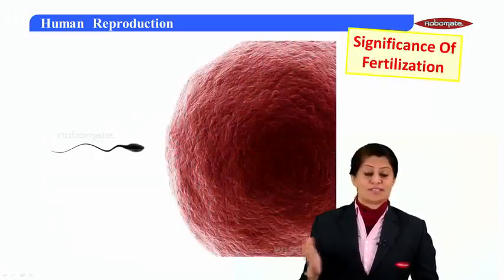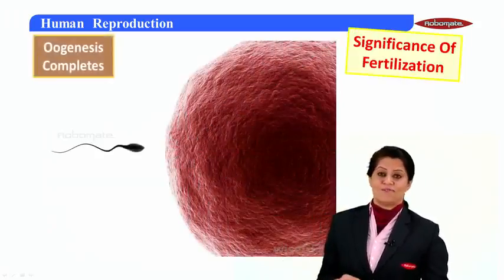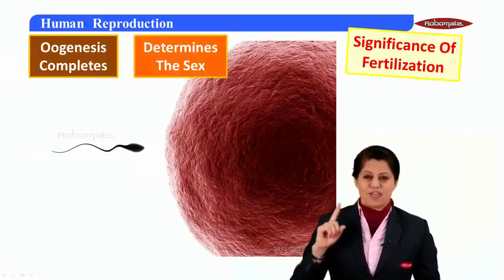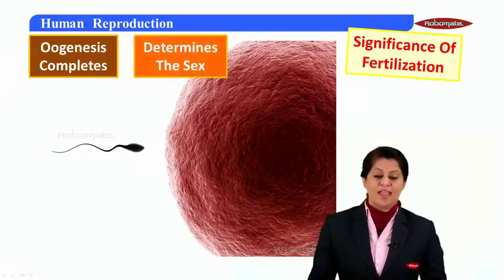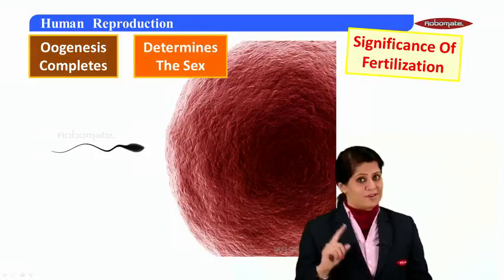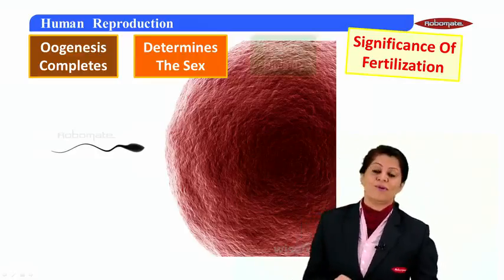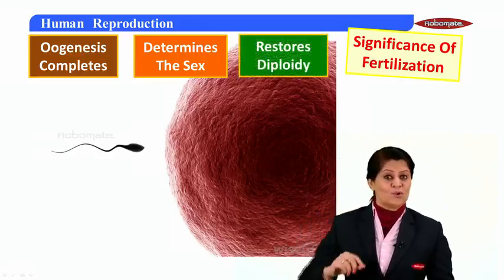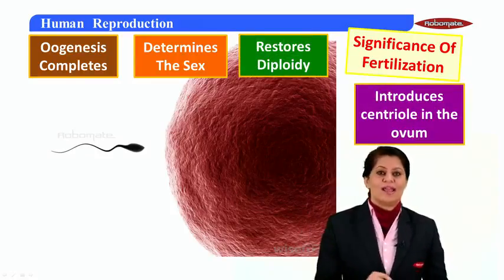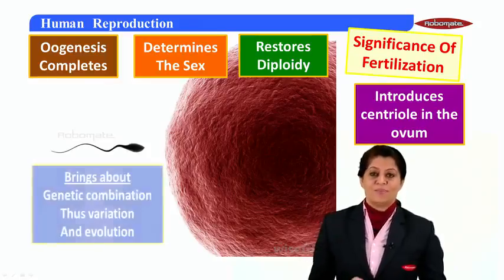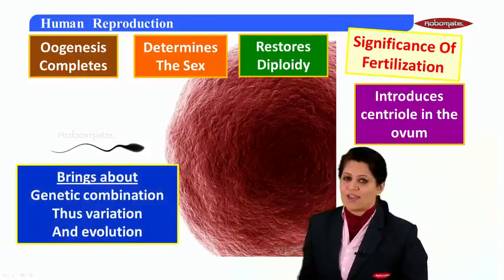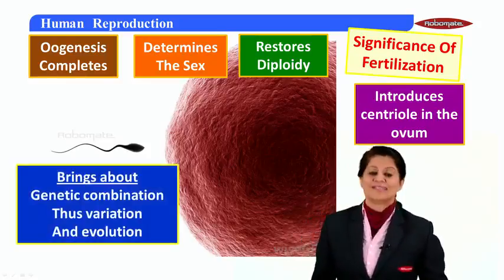The significance of fertilization: it completes oogenesis and determines the gender of the baby — if the sperm carrying the X chromosome fuses, it will be a baby girl; if it carries the Y chromosome, it will be a baby boy. It also restores diploidy, introduces the proximal centriole into the ovum, and brings about genetic recombination leading to variation and the most important process — evolution.